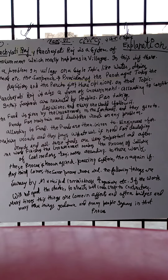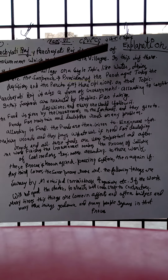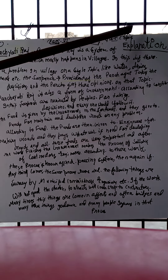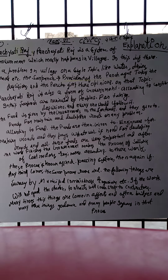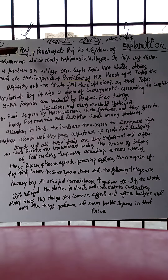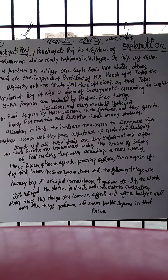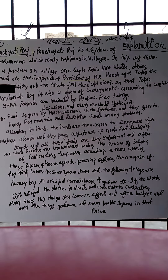Welcome to my channel. In this tutorial we will solve and learn our civics chapter number five. Our first topic is Panchayati Raj. Panchayati Raj is a system of government which mostly happens in villages. If there is a problem in a village on a single topic like water, drains, roads, etc.